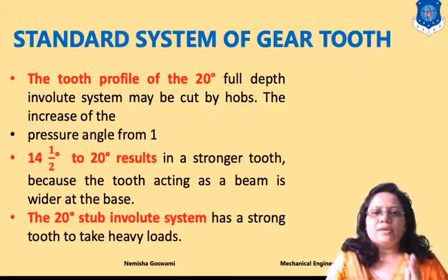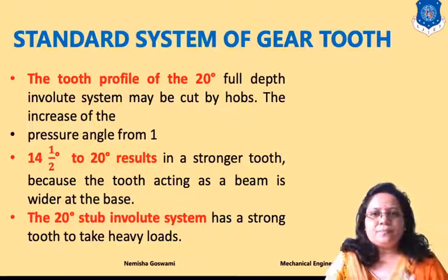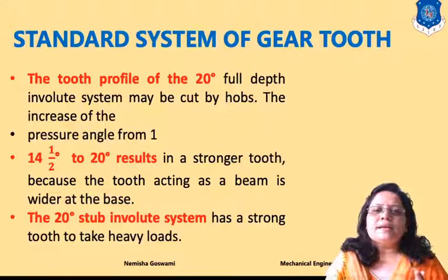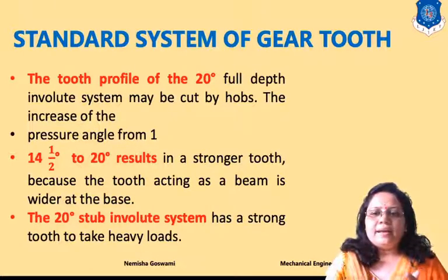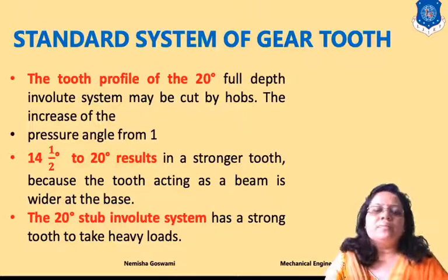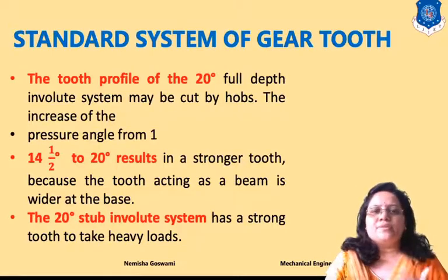The last standard system is the 20 degree stub involute system. These are very strong and can take heavy loads. They are generally used in worm gears because worm gears are used for high speed reduction.